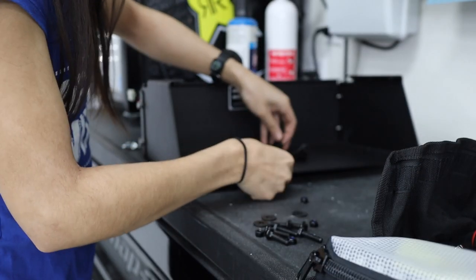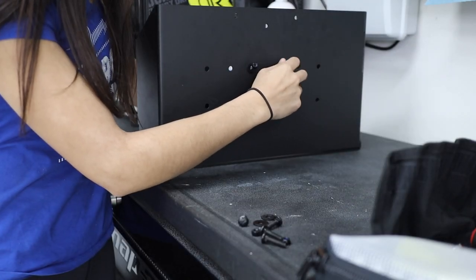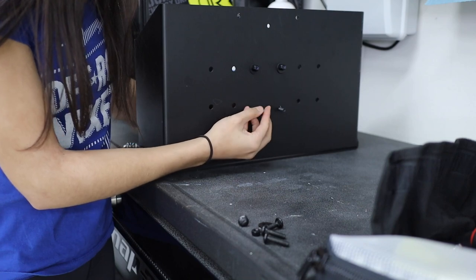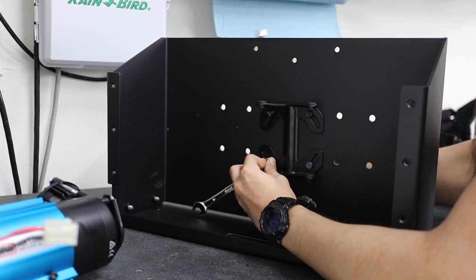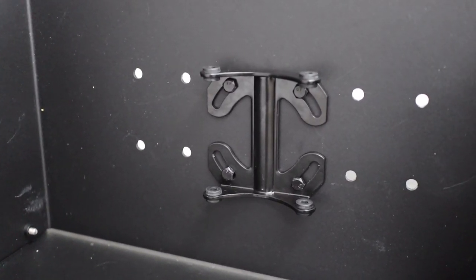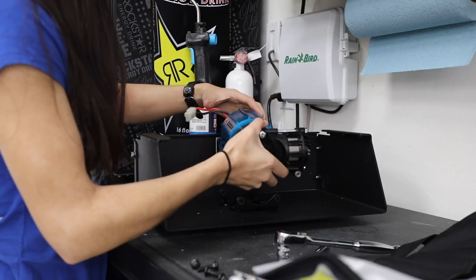Then I remove the mount that comes attached to the compressor using the 4mm wrench again. And in the ARB kit, there are bolts, nuts, and washers you can use to mount the compressor mount to the Expedition Essentials box. Then just attach the compressor back onto the mount.